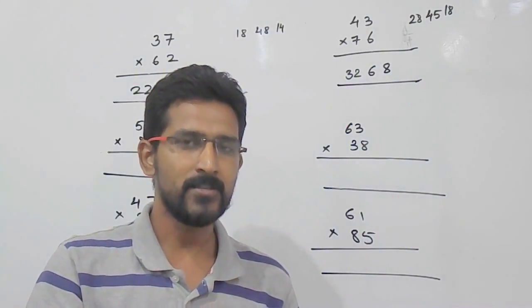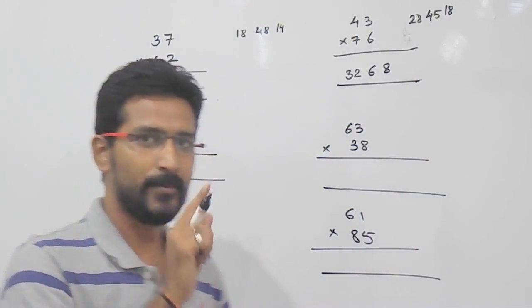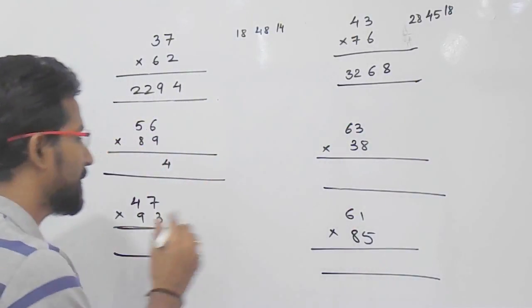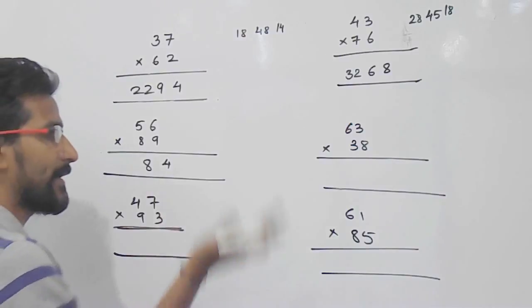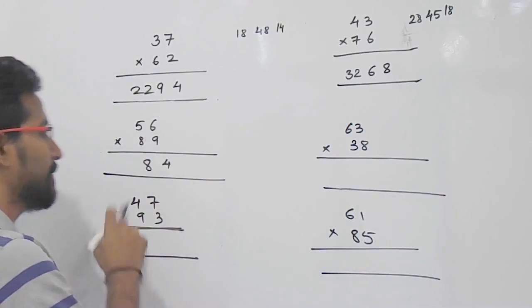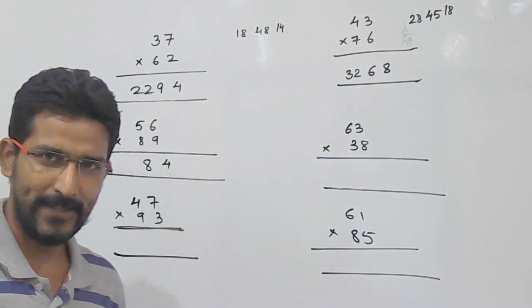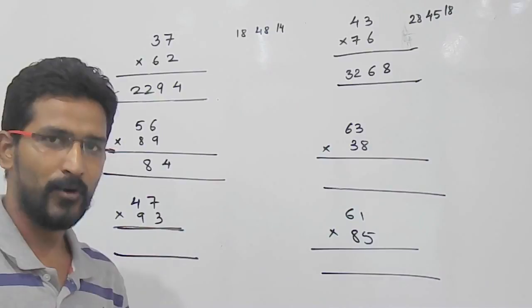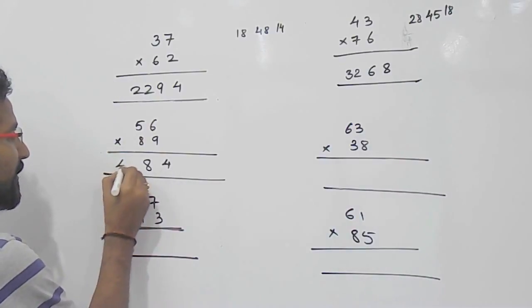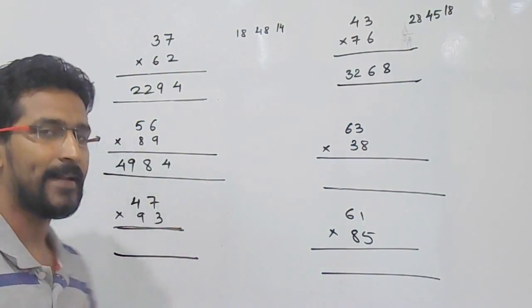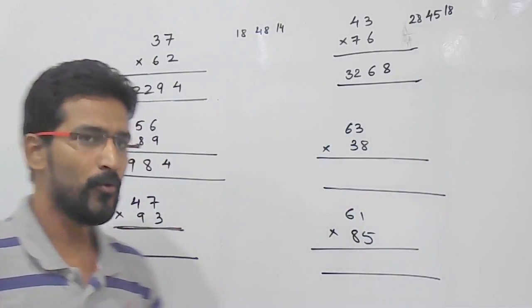So, from 98, write the unit place value 8. 9 will be carried forwarded. Then, 5 into 8 is 40. 40 plus 9 that is 49. So, you can directly write the answer 49.